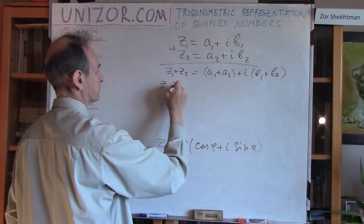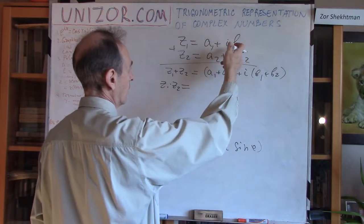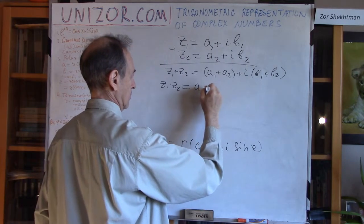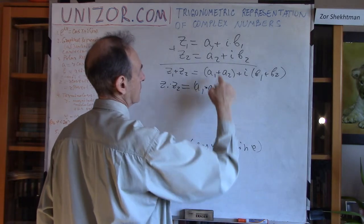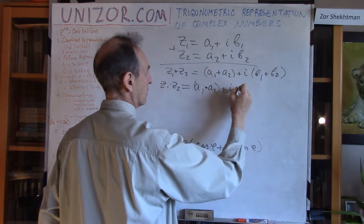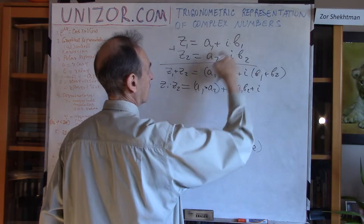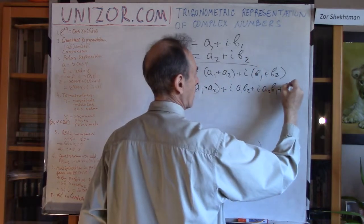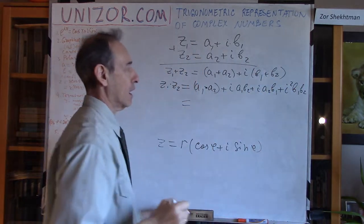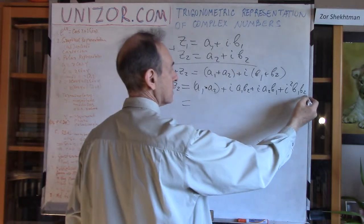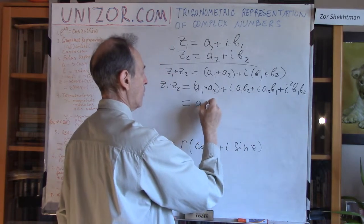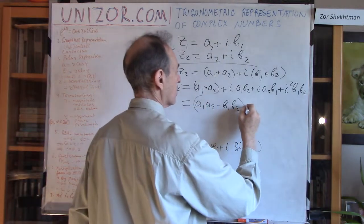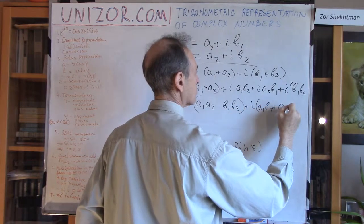Let's multiply them. It's a₁·a₂ + a₁·b₂·i + a₂·b₁·i + i²·b₁·b₂. Now i² = −1, so this becomes: the real part is a₁·a₂ − b₁·b₂, and the imaginary part is a₁·b₂ + a₂·b₁. It's not a terribly complex formula, but it is a little involved. Let's now do it in polar coordinates.